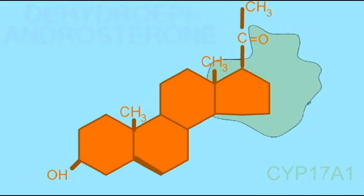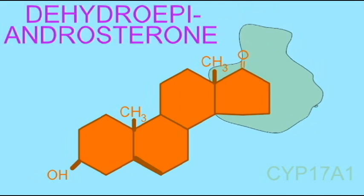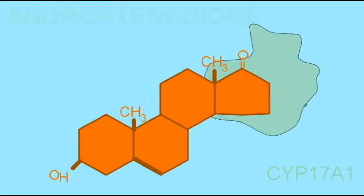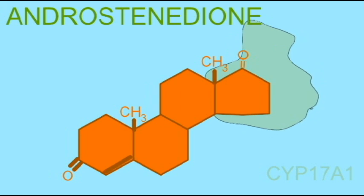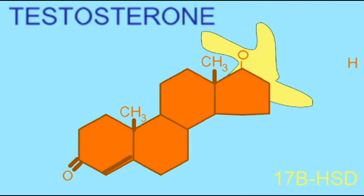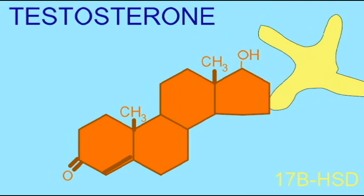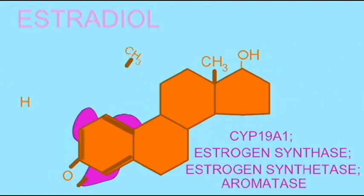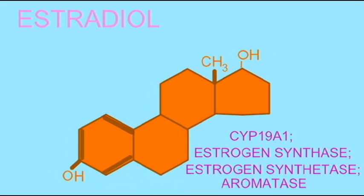Ultimately, estrogen is made from testosterone, which was its final precursor, and the enzyme which performs this final transformation is known by a number of names: aromatase, estrogen synthase, estrogen synthetase, or CYP19 alpha-1, referring to its position in the cytochrome p450 gene family. This is the metabolic process through which the hormone estrogen is made.